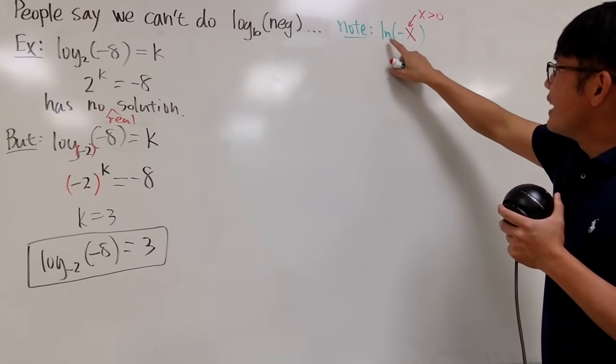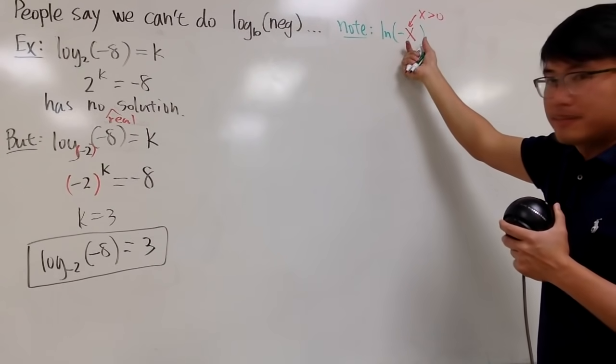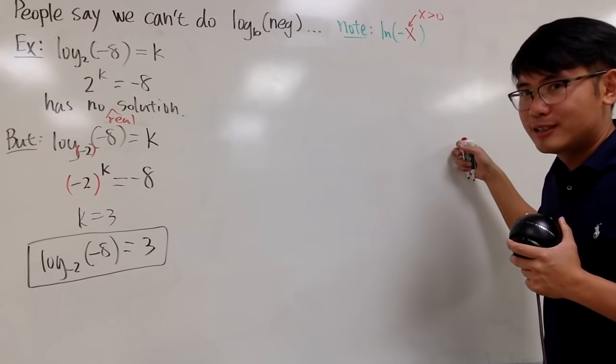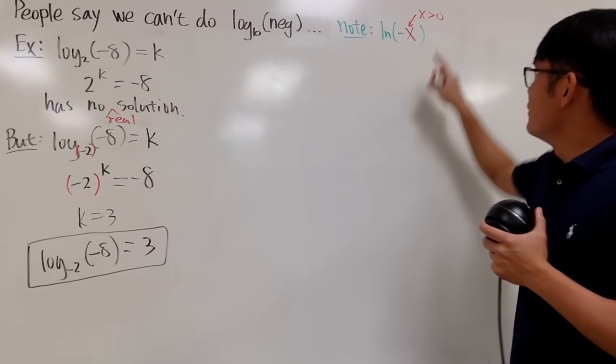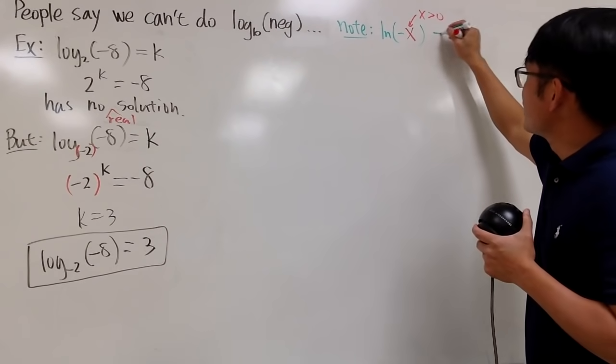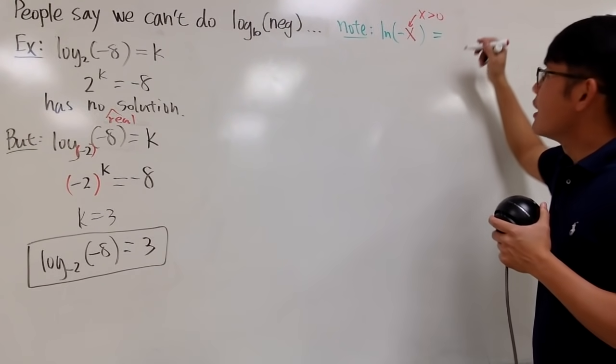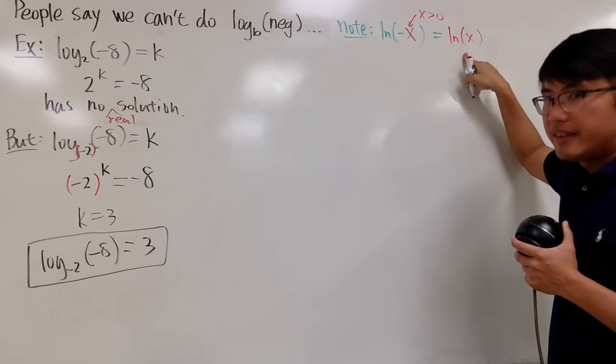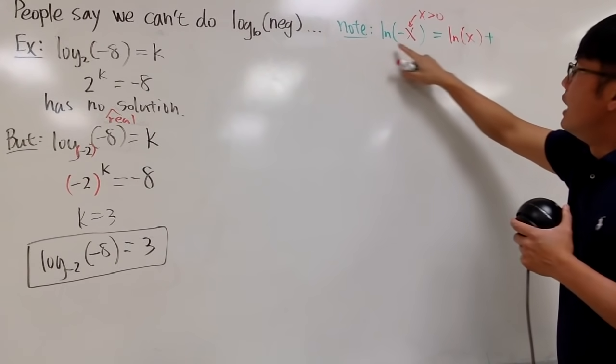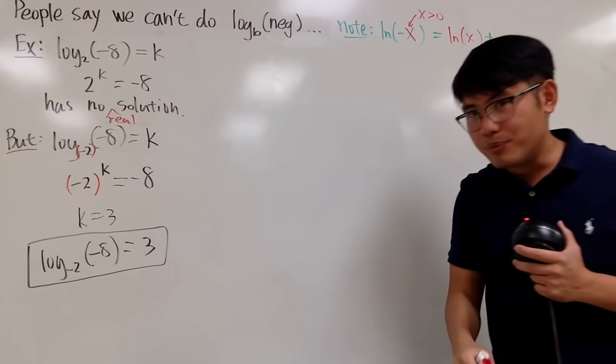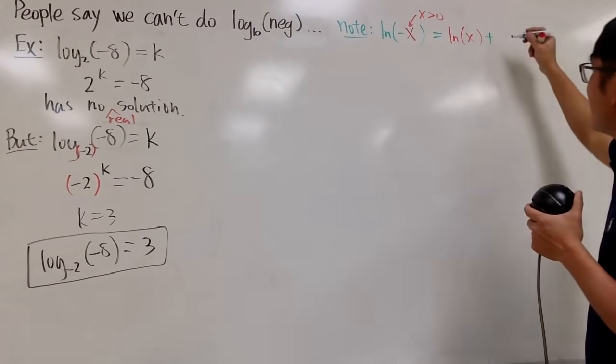This is ln of negative 1 times x. And you can write that as ln of negative 1 plus ln of x. ln of x, if x is positive, that's a real number part. So we'll write that down first. This is equal to natural log of x. And then, we add ln of negative 1. And again, watch my previous video. You end up with the following.